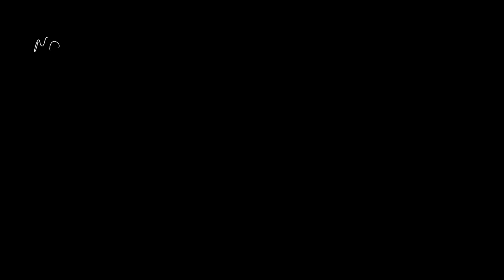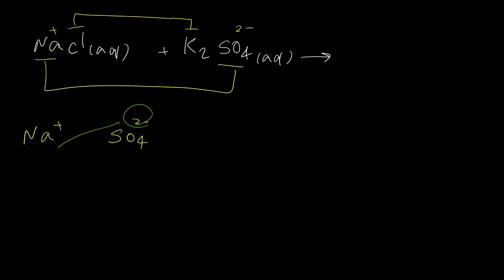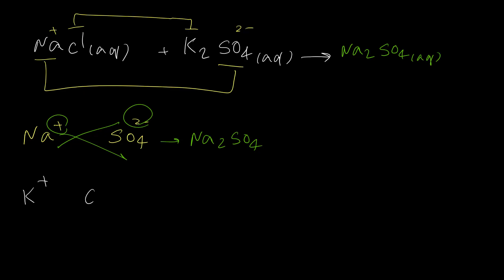For the last example, we would like to write the equation for the reaction between sodium chloride solution and potassium sulfate. We want to predict the products, write the ionic equation and net ionic equation. The products are between sodium and sulfate, and between chloride and potassium. Sodium is positive one and sulfate is negative two, so by criss-crossing the formula is Na₂SO₄ — sodium sulfate. For potassium and chloride, both are plus/minus one, so the formula is KCl. Group one elements are always soluble, so both of these compounds are aqueous.